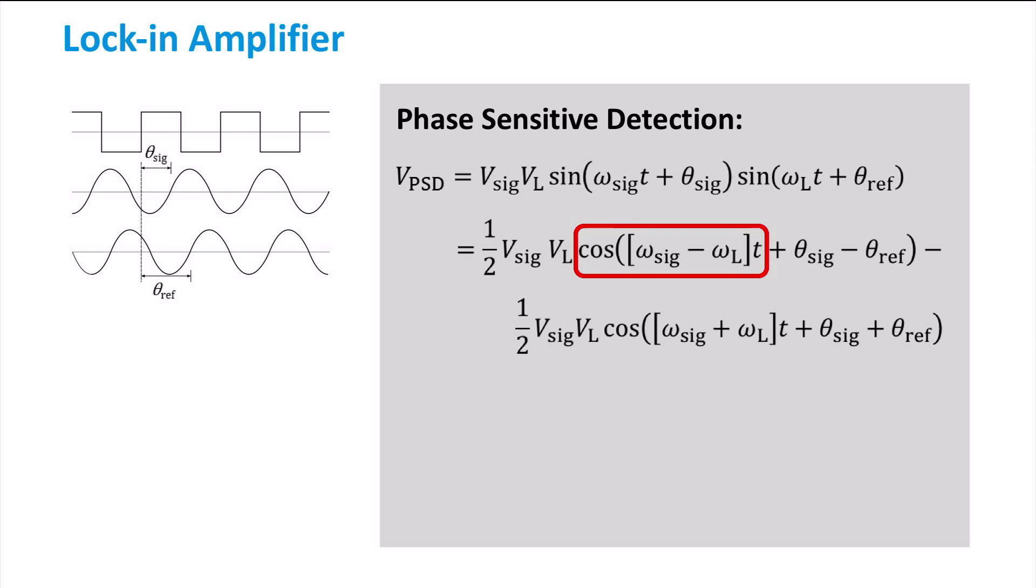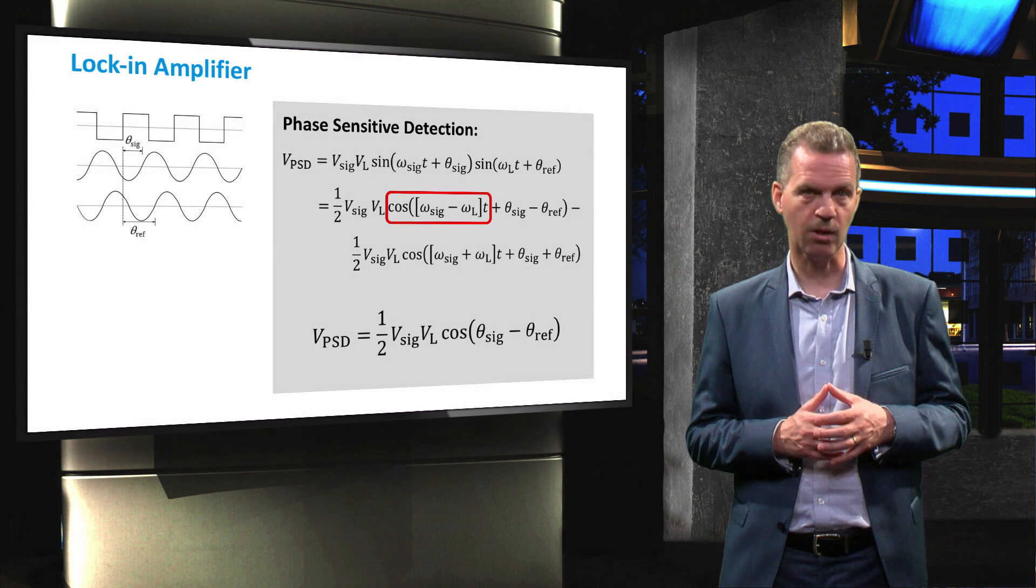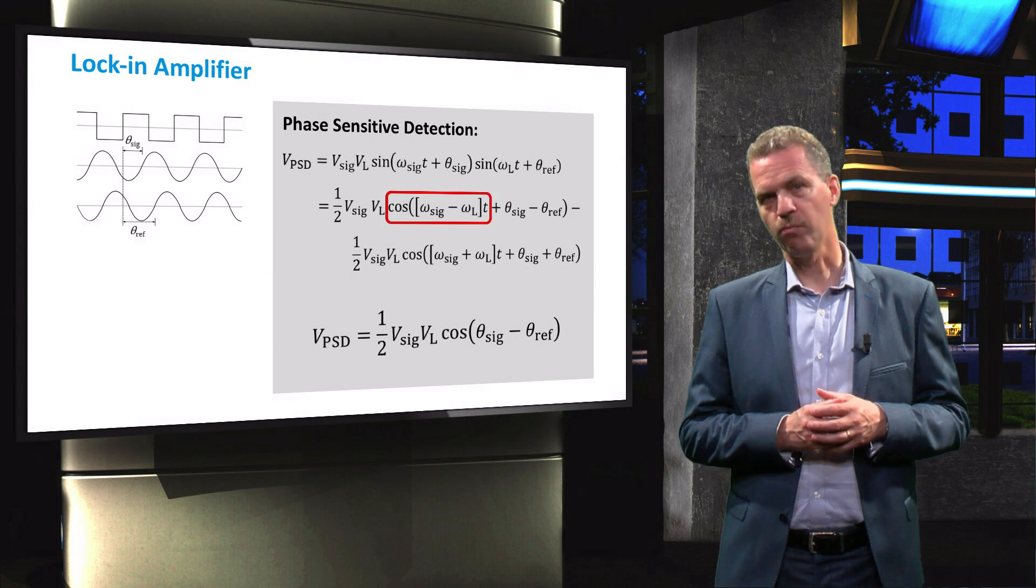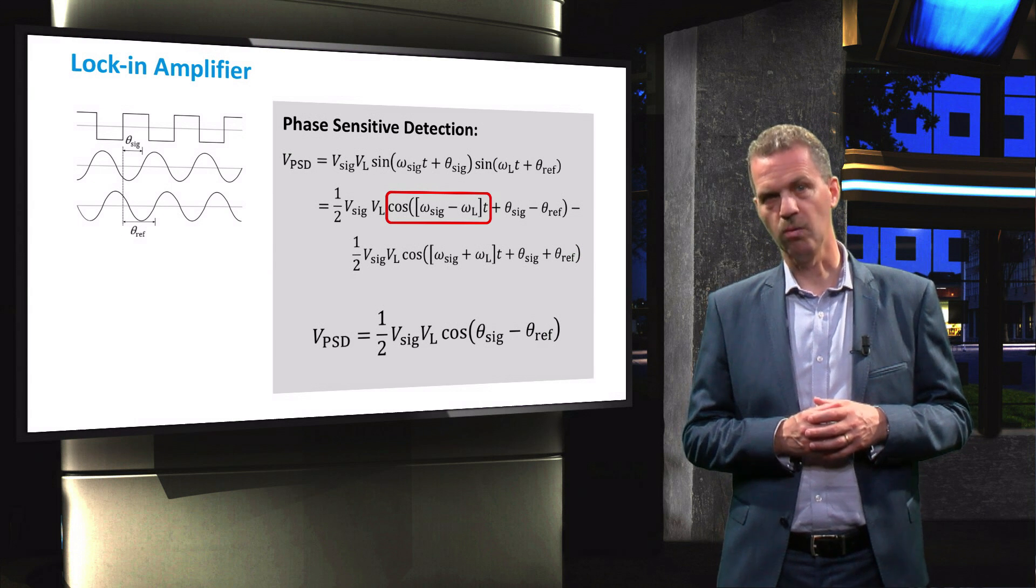However, we can see in the first cosine term that the frequency of the lock-in amplifier signal, omega L, is subtracted from the measurement signal frequency, omega SIG. These frequencies are only equal for the response signal with the chopper frequency. When these frequencies are equal, the cosine term becomes 1 and we arrive at the following DC signal. Thus, by passing the phase-sensitive detection signal through a low-pass filter, we obtain a DC signal that is proportional to the amplitude Vsig of the measurement signal in which we are interested. This is the reason why the probing light is chopped to obtain a measurement signal with a known frequency.